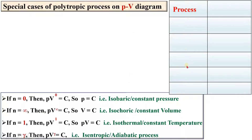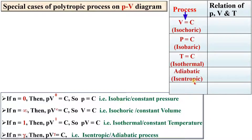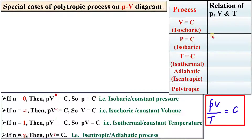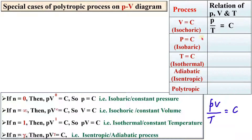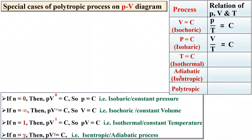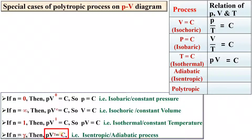Now let us see these processes on the PV diagram. To summarize the different processes: for the isochoric process, from the general gas equation PV/T equals constant with volume constant, we get P/T equals constant. For isobaric, with pressure constant, V/T equals constant. For isothermal, constant temperature gives PV equals constant. For the adiabatic process, PV raised to gamma equals constant. And for the polytropic process in general, PV raised to n equals constant.